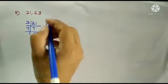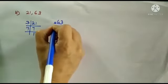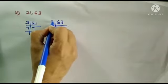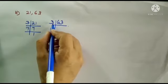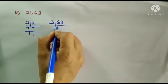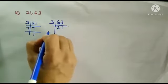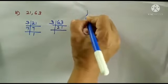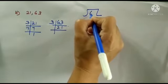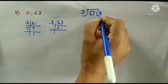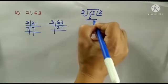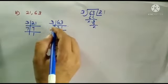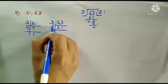Now we will take 63. 63 in 3's table. 3 times 21. If you don't know the table, then you divide it. 63 divided by 3 is 21. 21 divided by 3 is 7. So 63 is 3 times 3 times 7.